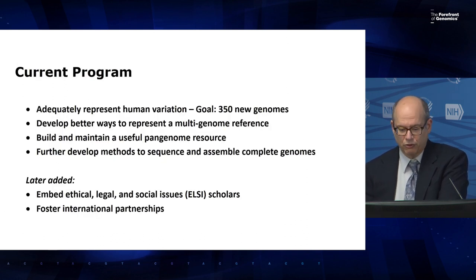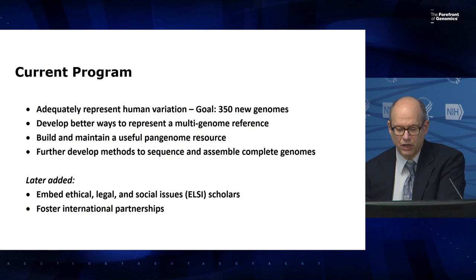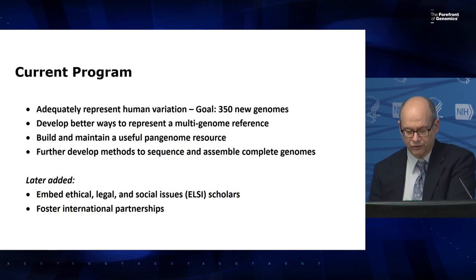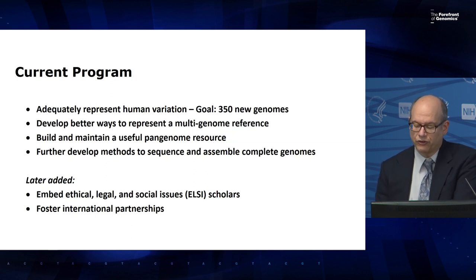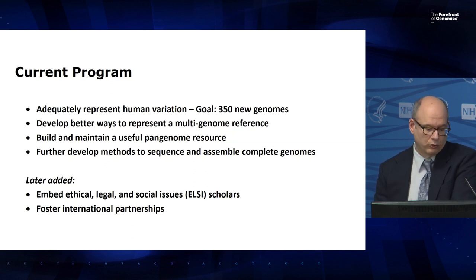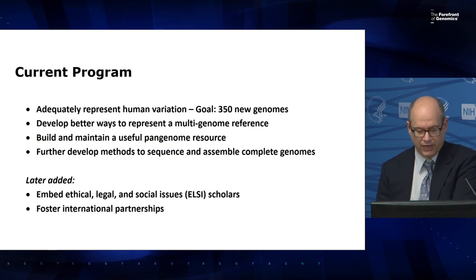In 2019, we started the Human Genome Reference Program to move towards a better human reference. The goals included building a multi-genome reference or pan genome resource that adequately represents human variation, with an explicit goal of adding 350 individuals to the reference. We also aimed to develop better ways to represent a multi-genome reference, build and maintain a useful pan genome resource including outreach to the community, and further develop methods to sequence and assemble very high-quality genomes.